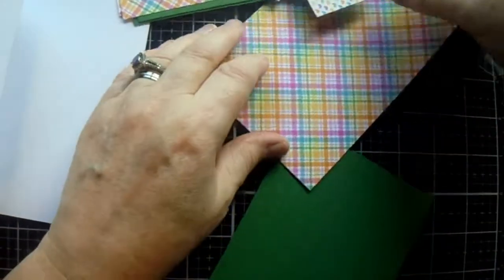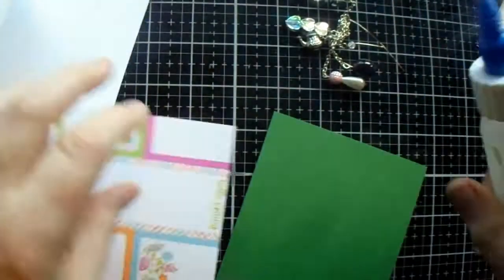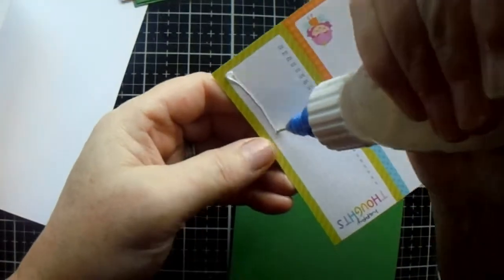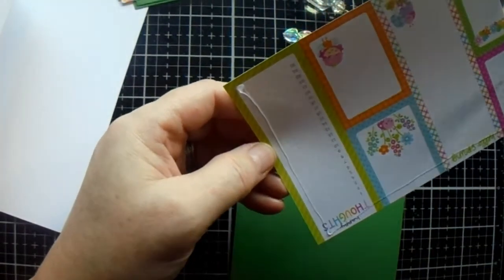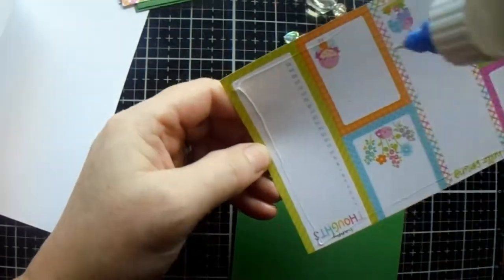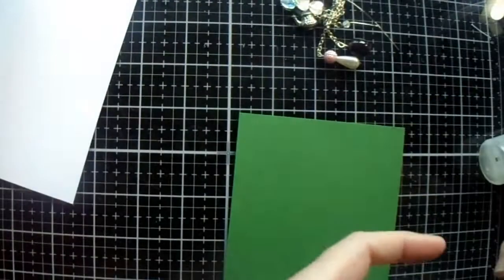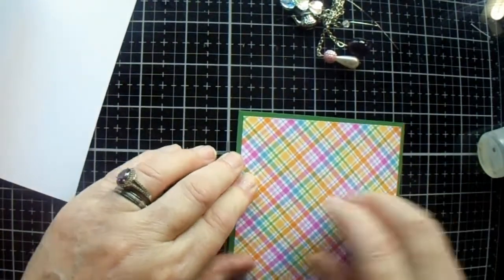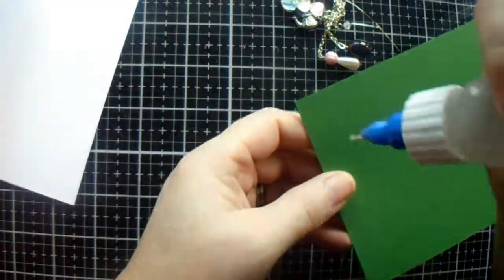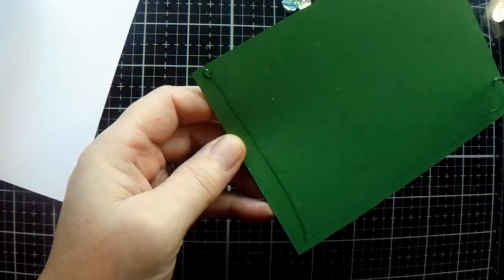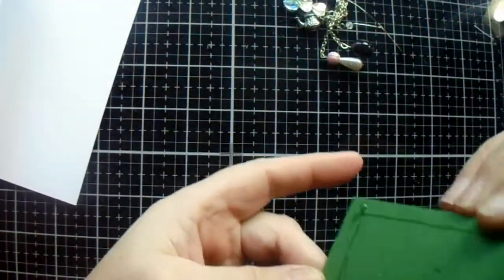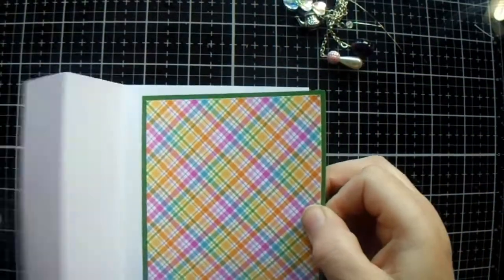Your mats and layers are as follows. Large mat: 4 by 5 and a half. Layer for the top of that: 3 and 3 quarters by 5 and 3 eighths. That's your large layer going on the inside. I should have had these prepped together but I forgot about them.